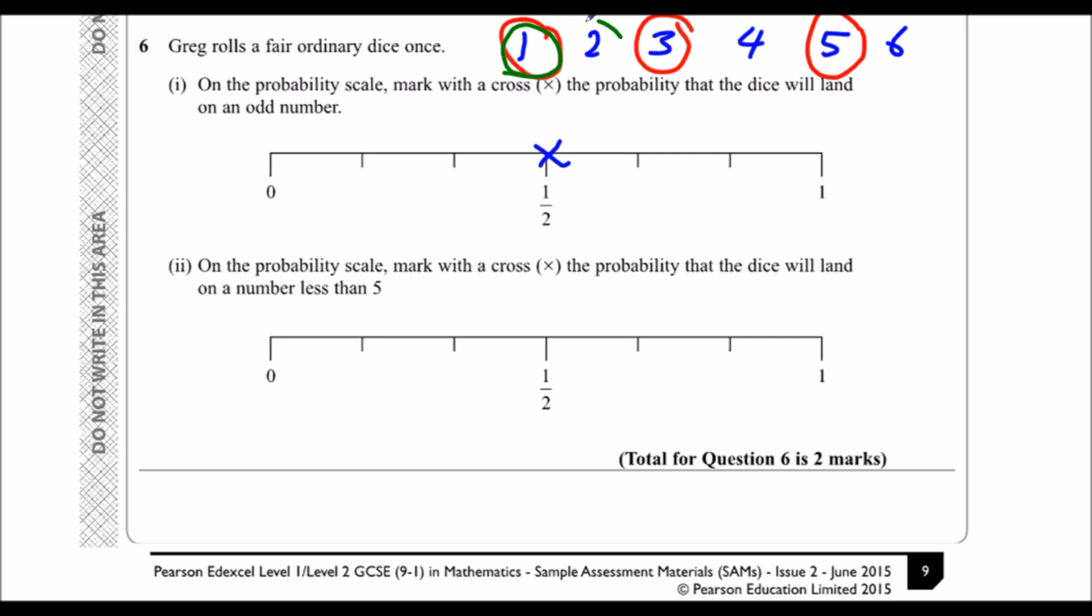So less than five, I could have one, two, three, and four. So that means it is four out of six.